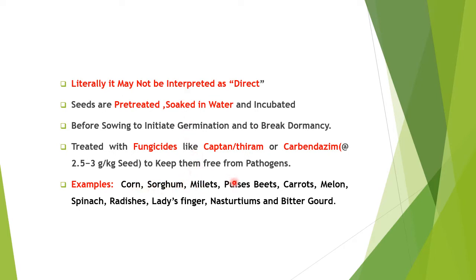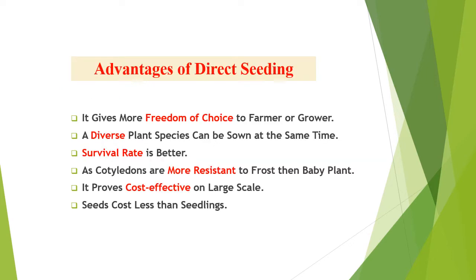Examples of crops propagated by direct seeding include corn, sorghum, millets, pulses, beet, carrots, melon, spinach, radish, ladyfinger, nasturtium, and bitter gourd — all subjected to pre-treatments. Advantages of direct seeding include more freedom of choice for the farmer, and diverse plant species can be sown at the same time.